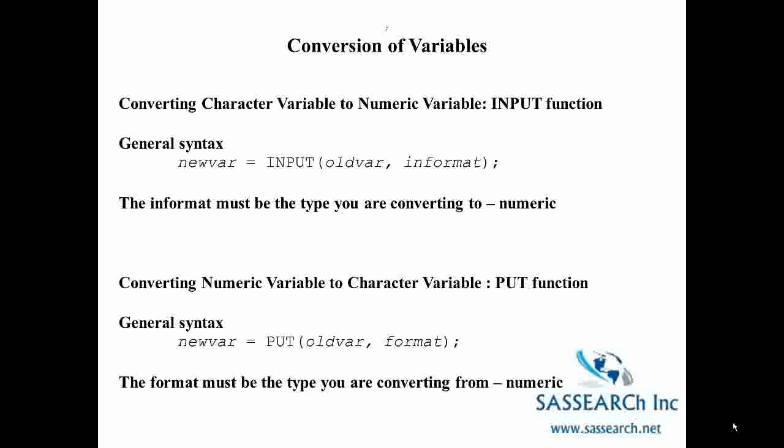You can also convert a numeric variable to a character variable using the PUT function. This can happen if you had a variable such as age group equals 1. You could create a format so that when you used a procedure, age group would have a label. But let's say you wanted to actually create a character string — a new variable that was a character string instead of the code 1. You would use the PUT function for that. Similar to using an informat, when creating a character variable from a numeric one, we use a format in our PUT statement. The format must be the type you are converting from — in this case numeric to character string.